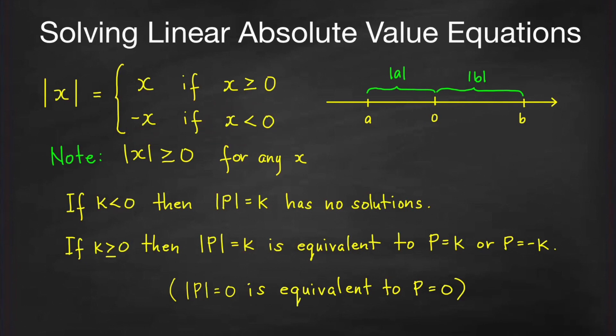So the absolute value of 10 is equal to 10. And the absolute value of negative 5, since that is a negative number, it is equal to the negative of negative 5, which is equal to positive 5. Take note that the absolute value of any number is always greater than or equal to 0.